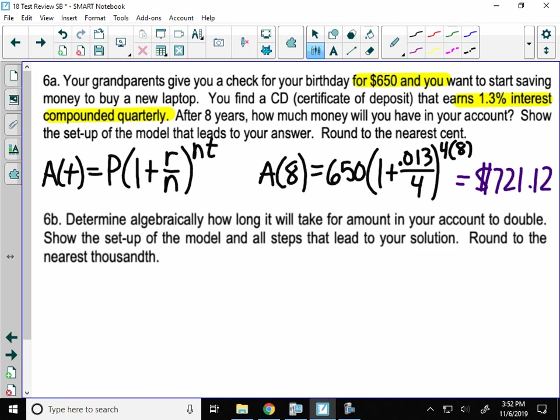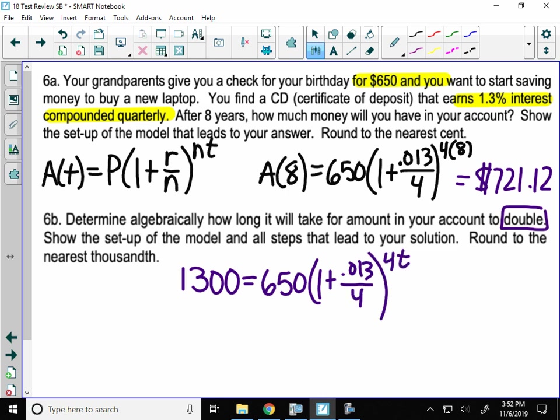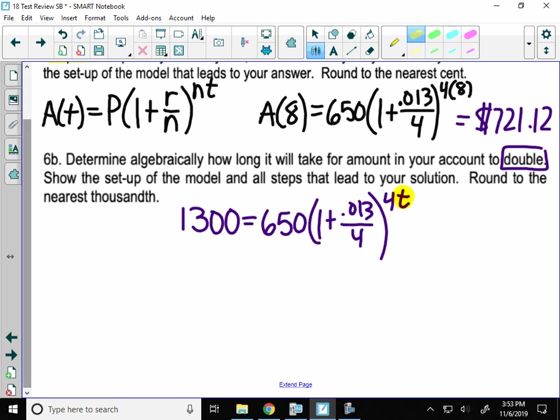So now the question is, determine algebraically how long it will take that $650 to double. Now the double of $650 is $1,300. Your goal is $1,300. And this is our original equation. Now this time I'm going to leave it as 4T because we want to know how long, what's the time, until I get that $1,300. So I need to solve this exponential equation.